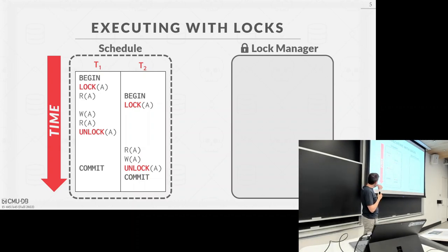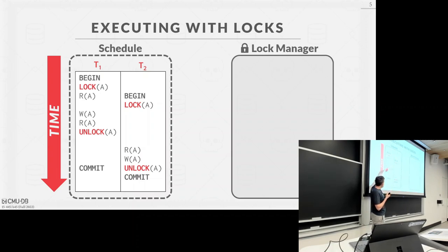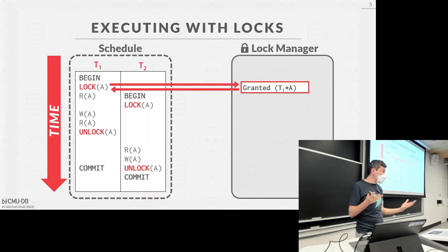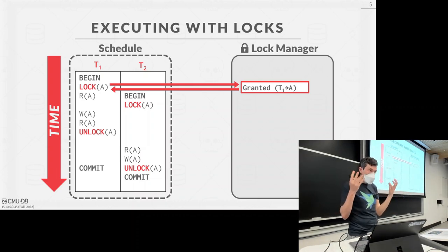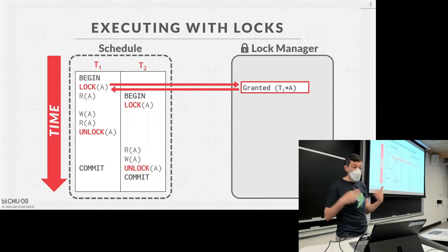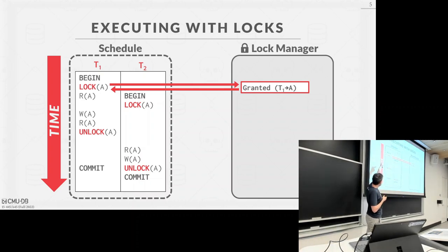Here we have two transactions, T1 and T2. T1 does a read on A, write on A, read on A, and T2 does a read on A then write on A. We have explicit lock commands — lock and unlock — corresponding to the objects we're reading or writing. When a transaction starts, it makes a lock request to the lock manager, a centralized component that tracks what locks exist, who holds them, and who's waiting. When T1 issues the lock request, the lock manager grants it since nobody else has it, so T1 proceeds with read and write on A.